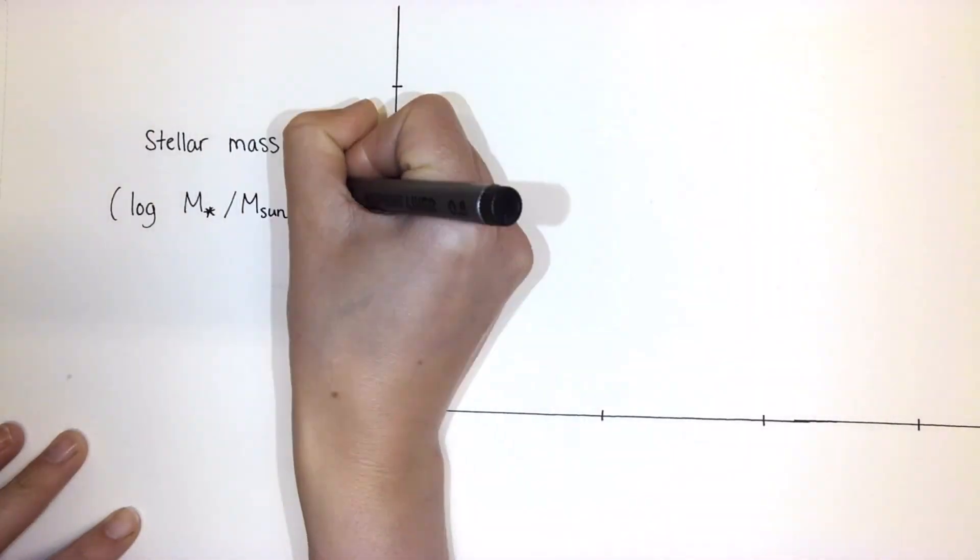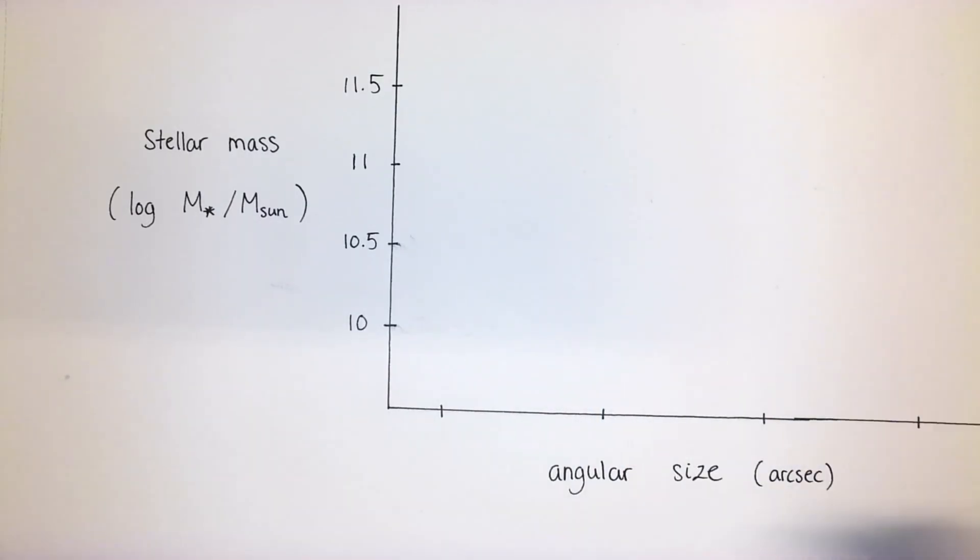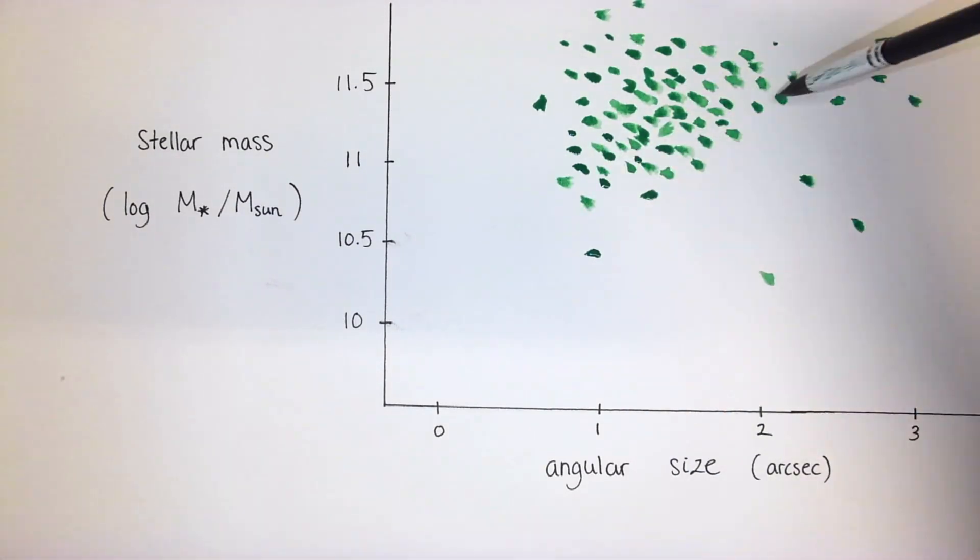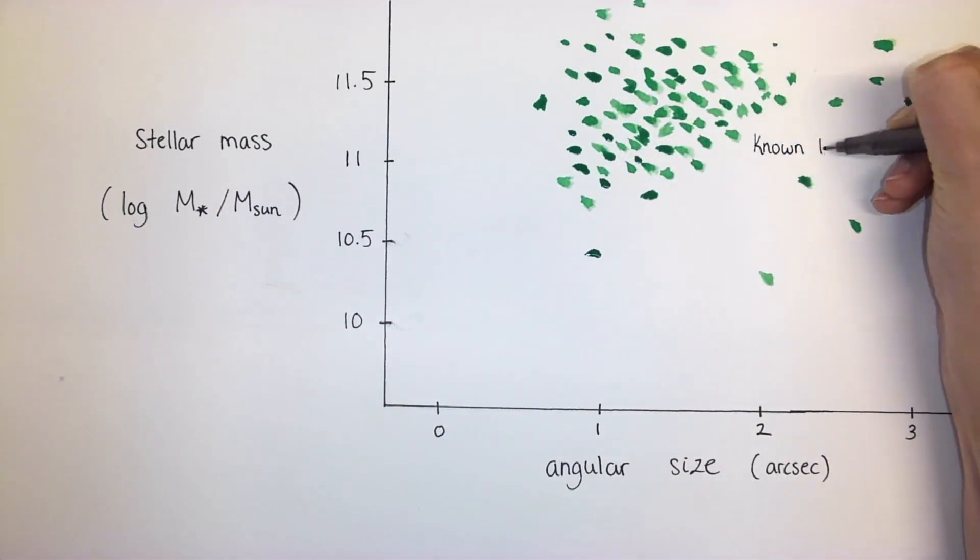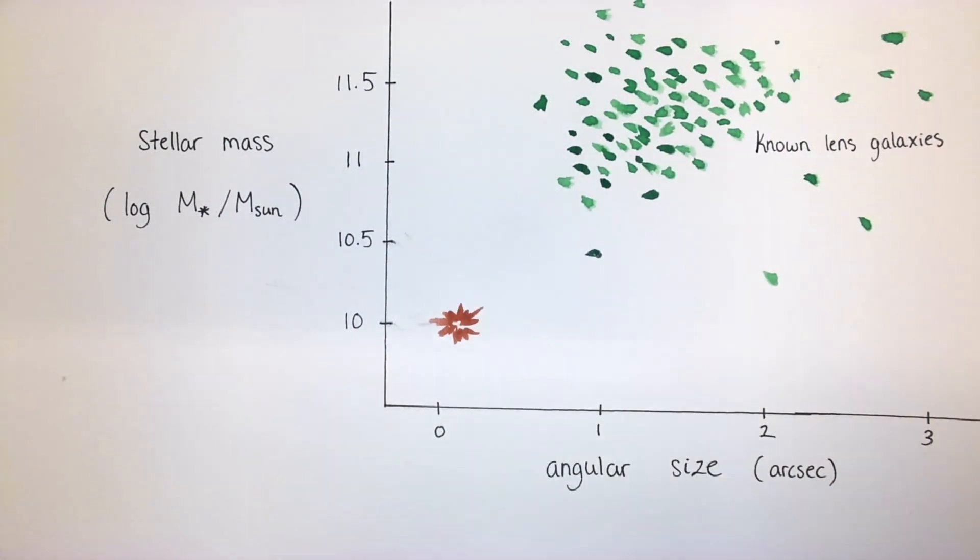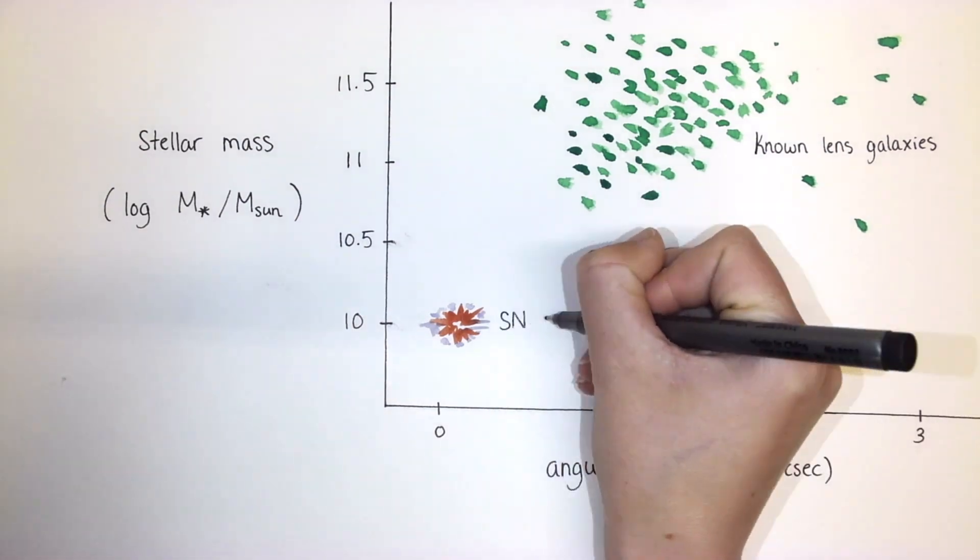Compared to other known lens galaxies, the galaxy that lensed Supernova Zwicky turns out to be a special one. It's much smaller and lighter than any lens galaxies we've encountered so far. This diagram shows the masses and angular sizes of known lens galaxies, and it shows that Supernova Zwicky is an outlier.